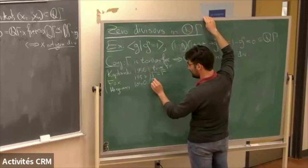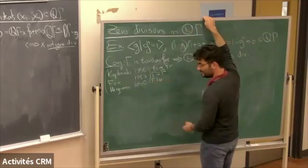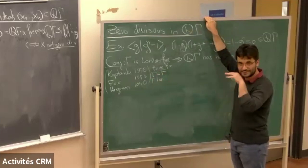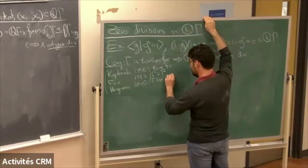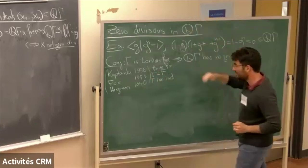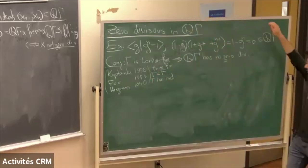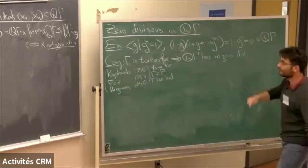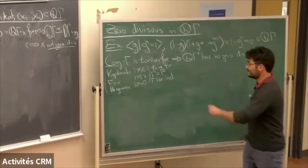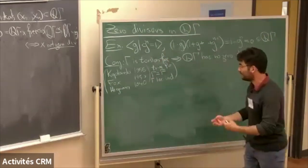Higman proved the zero divisors conjecture for locally indicable groups. A lot of groups are locally indicable, and people have looked for large classes of groups for which it holds. The conjecture is known for some classes of groups.